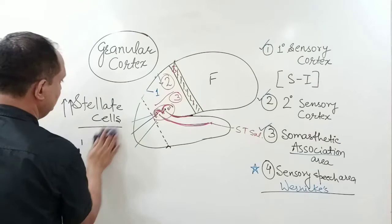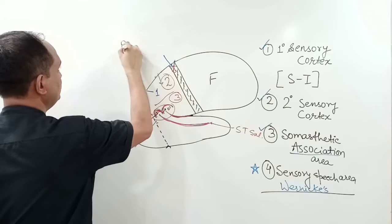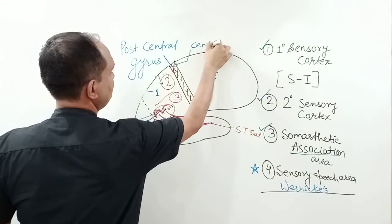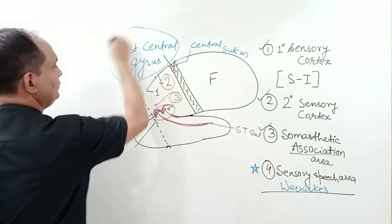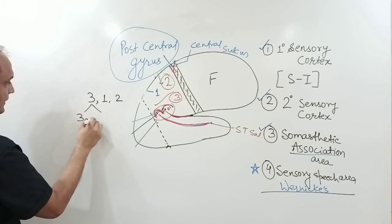The primary sensory cortex occupies the gyrus just behind the central sulcus, known as the post central gyrus. The Brodmann's areas corresponding to the primary sensory cortex are areas 3, 1, and 2 — where area 3 is further subdivided into 3a and 3b.